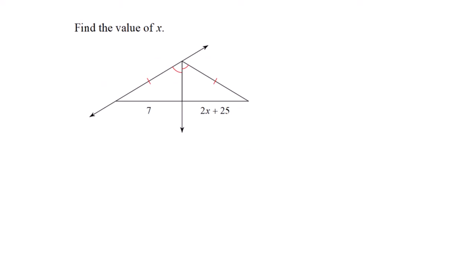There's a couple ways to do this, but I saw two congruent triangles. The 7 and 2x plus 25 are equal to each other. Doing the algebra, negative 18 equals 2x, so x equals negative 9.